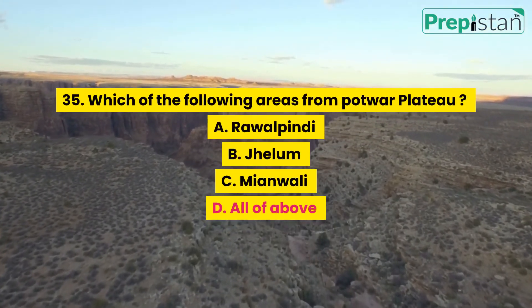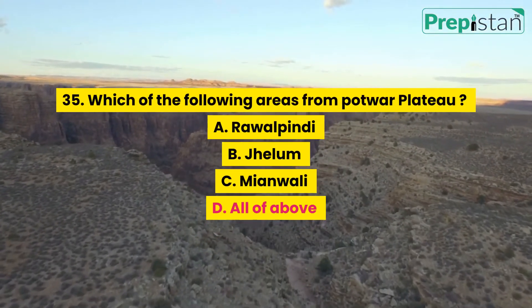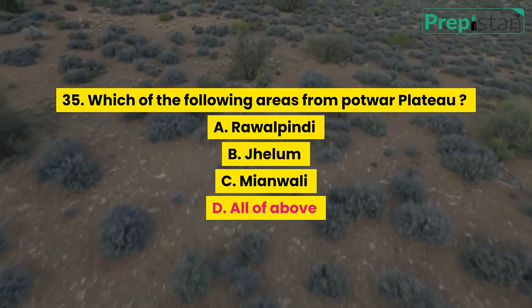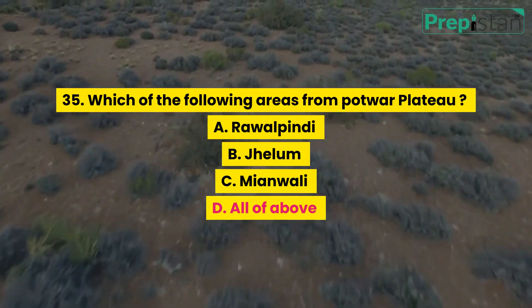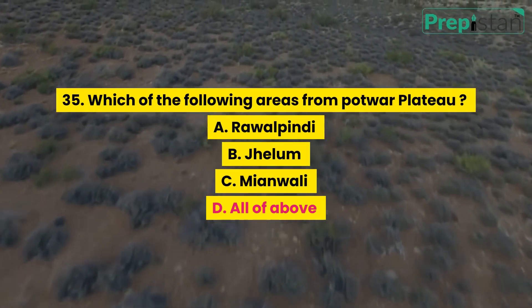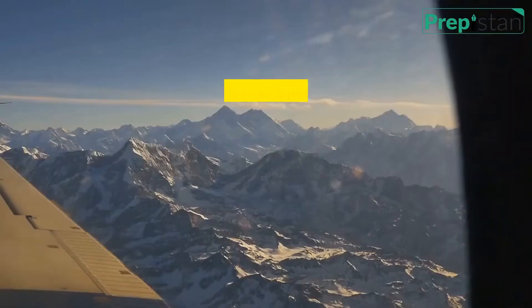Question 35: Which of the following areas form Potwar Plateau? A. Rawalpindi, B. Jhelum, C. Mianwali, D. All of the above.